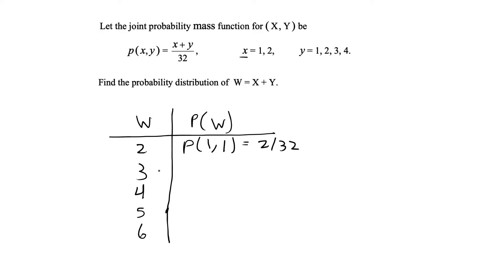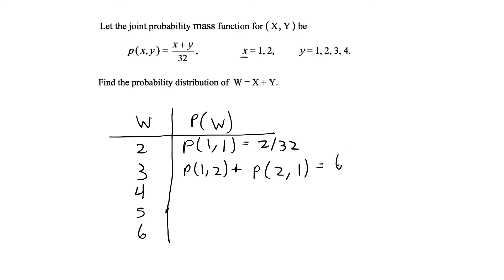w can equal 3 two different ways: when x=1 and y=2, plus when x=2 and y=1. We need to find both the joint PMF for P(1,2) and P(2,1). In either case that's 3/32, so adding them gives us 6/32. So P(W=3) = 6/32.